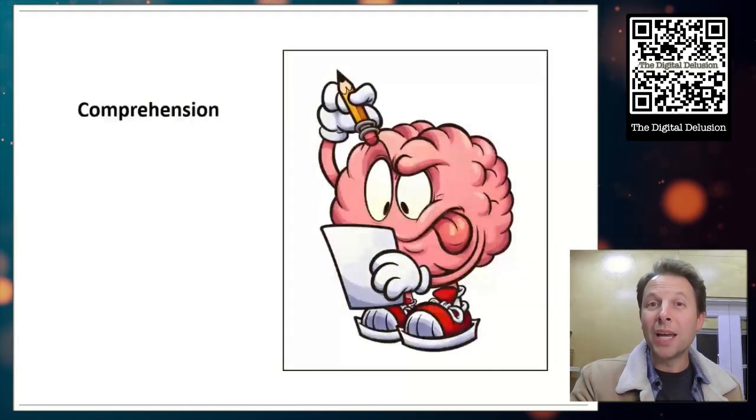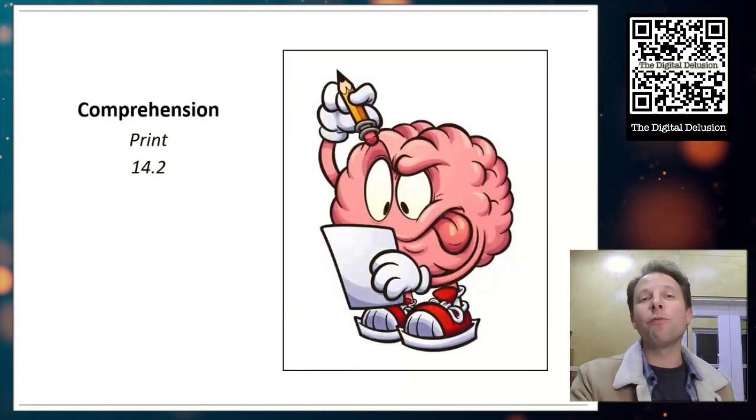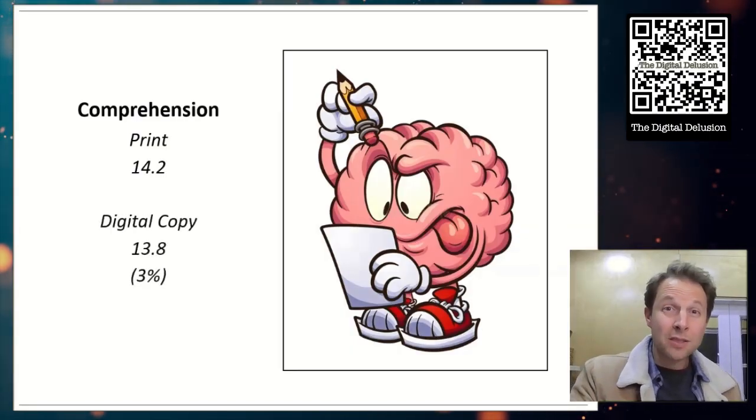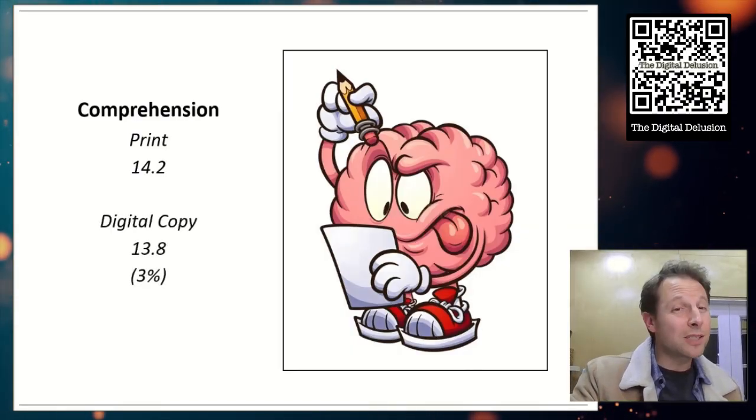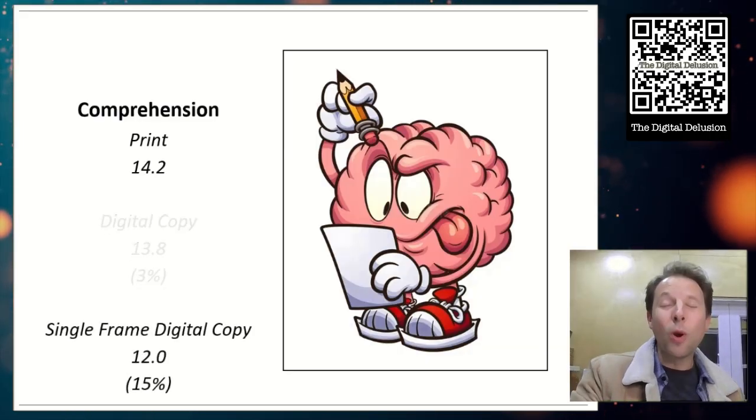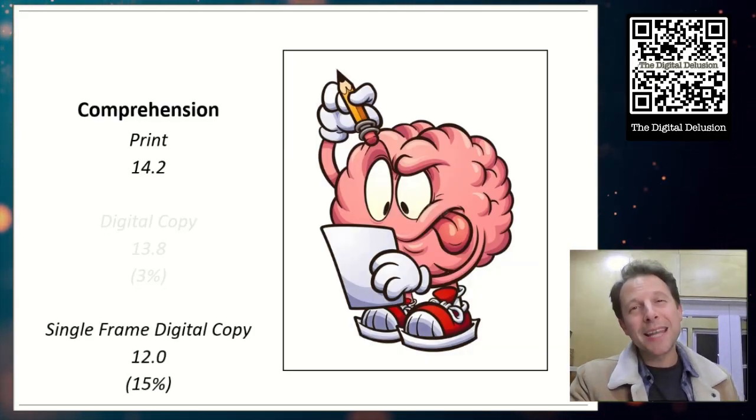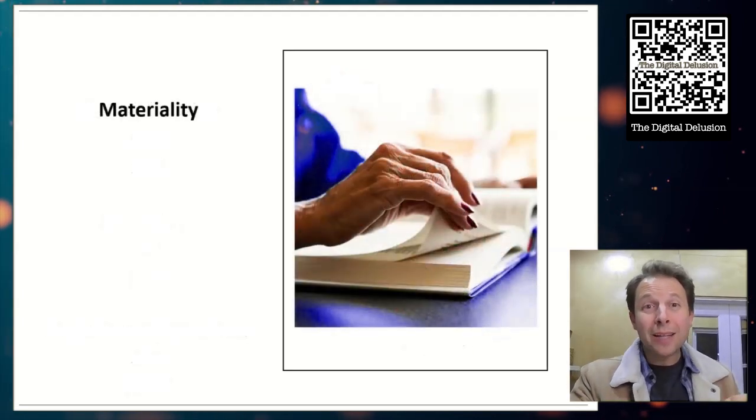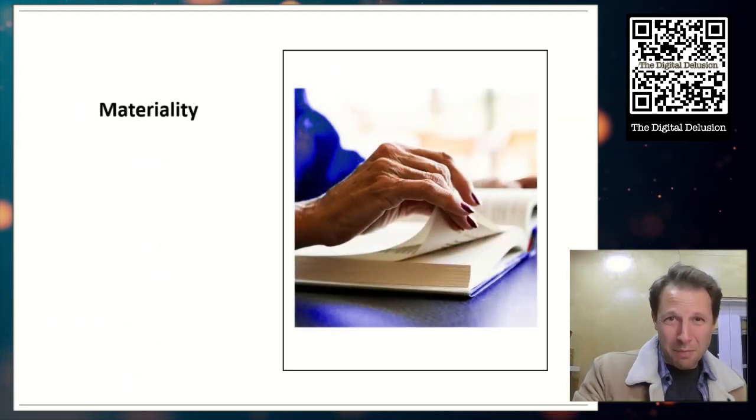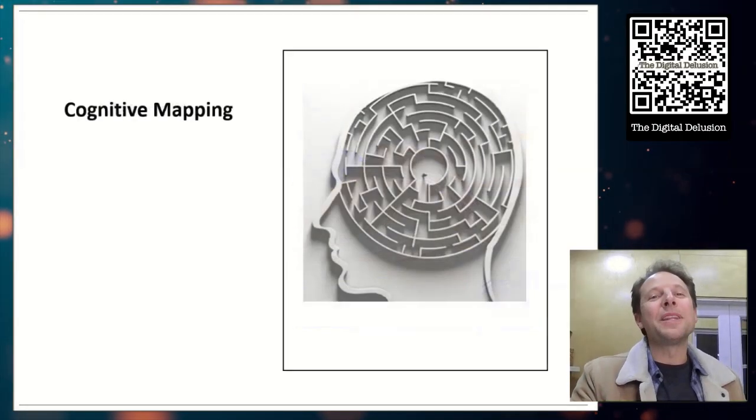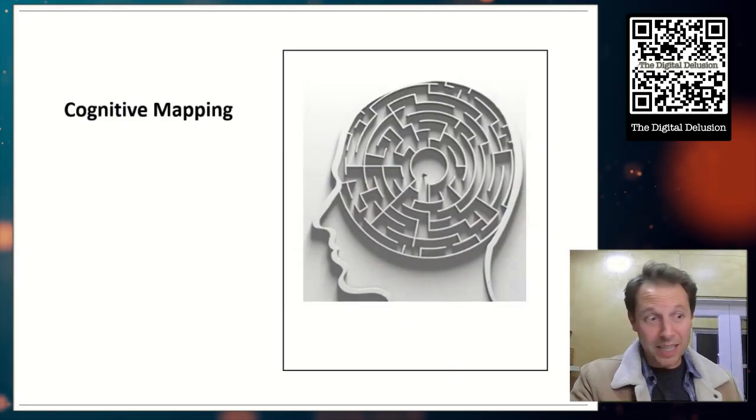And finally, when it came to comprehension, memory. The kids who read the physical comic book scored a 14.2 out of 17. The kids who read the full version digital text, 13.8 out of 17. So again, only about 3% less. But the kids who read the single cell digital version, 12.0. 15% less than the kids who read the physical comic books. So we see the materiality idea has a little impact, about a 3% negative change in all measures, which isn't huge, but that cognitive mapping seems to be where everything is landing.